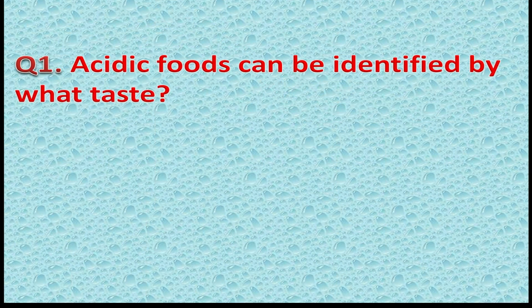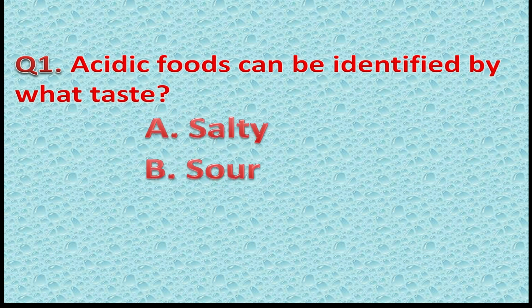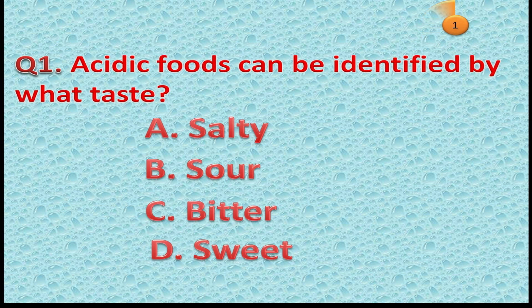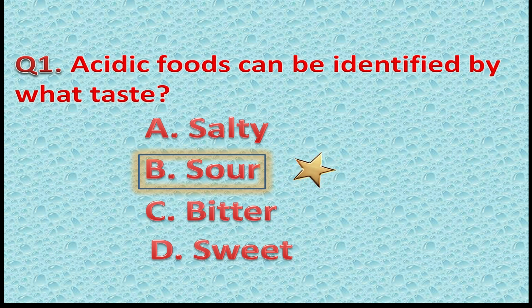Question 1: Acidic foods can be identified by what taste? This is an MCQ-based quiz so you will get 4 options. Option A: Salty taste. Option B: Sour taste. Option C: Bitter taste. Option D: Sweet taste. You will get 5 seconds to answer. The correct answer is B — Sour taste. If you gave the same answer you got 1 point or 1 star, but if you gave the wrong answer, sorry, you did not get anything.